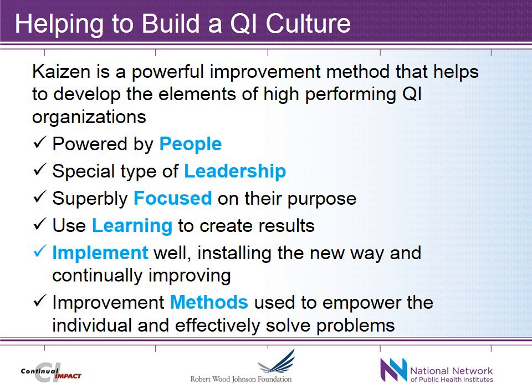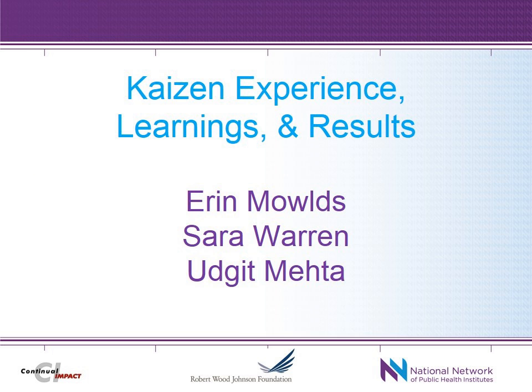In terms of building that culture of quality, the things that are critical include: people being the centerpiece of it, leadership and leadership support, having a focus on what you're really trying to do, learning along the way, implementing well, and the improvement method. Kaizen is very much about this — it's very much a team-based people-oriented method. It does require immediate leadership support because you're making actions really quick. You are very focused, looking at a number of different methods in a Kaizen event, implementing and learning all in one week.